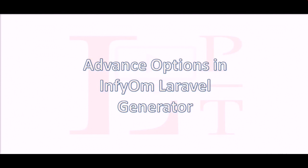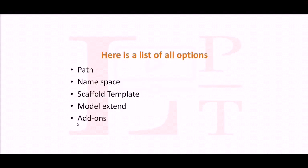Everything is by default configured in the config file which is provided by the generator when you publish the InfyOm template. These five options are useful when you generate a scaffold. Sometimes you need to generate files in a subdirectory or nested level directory. You can do that by customizing the path in your config file. For example, when you want to generate a model in a subdirectory, you need to customize the model path in the config file.